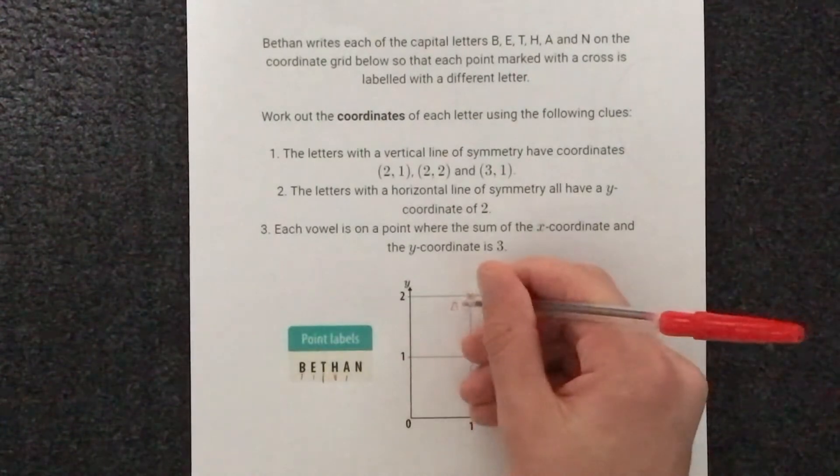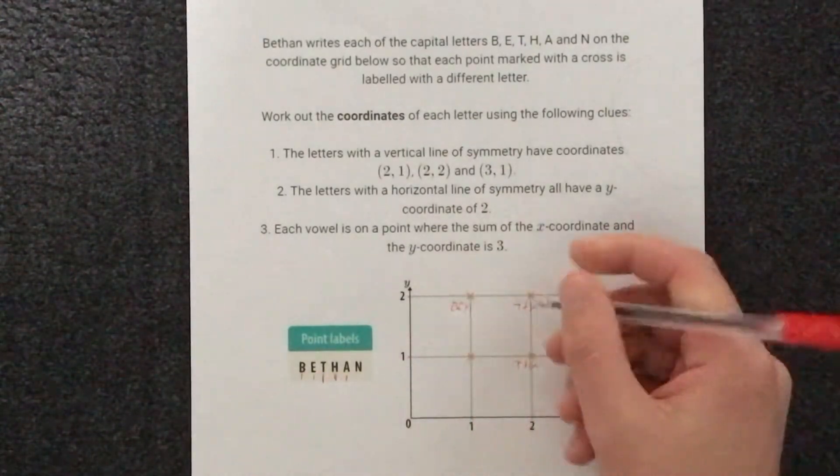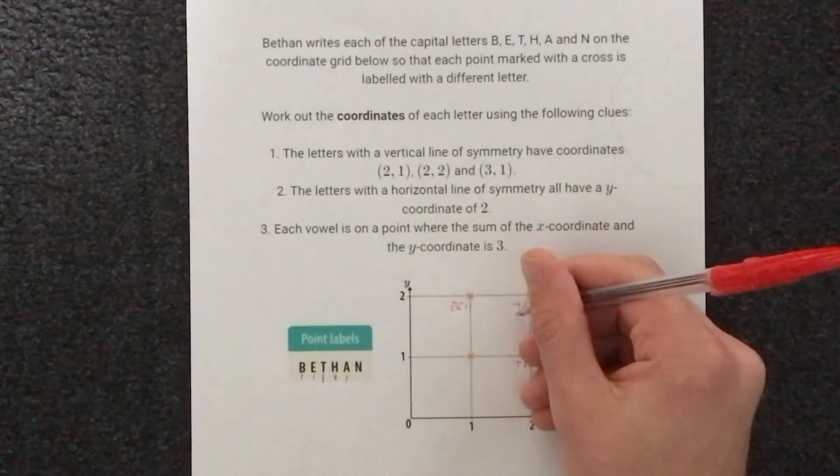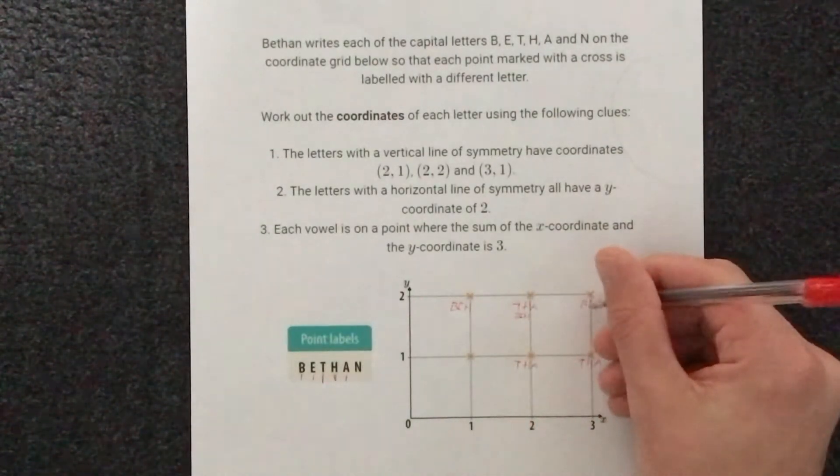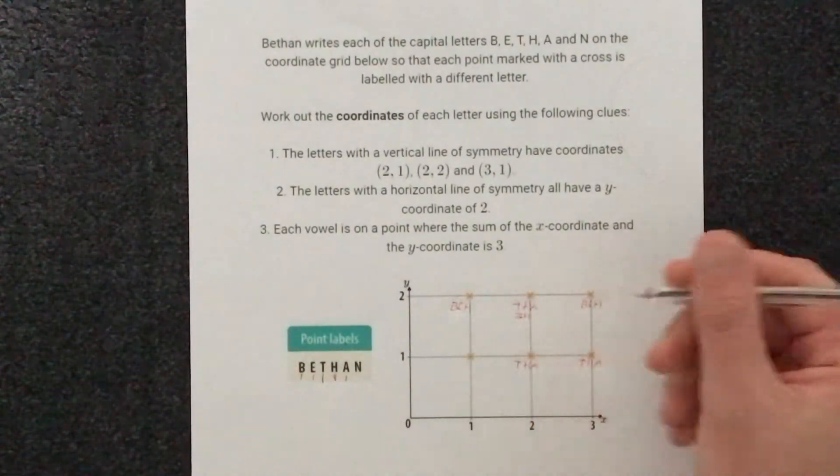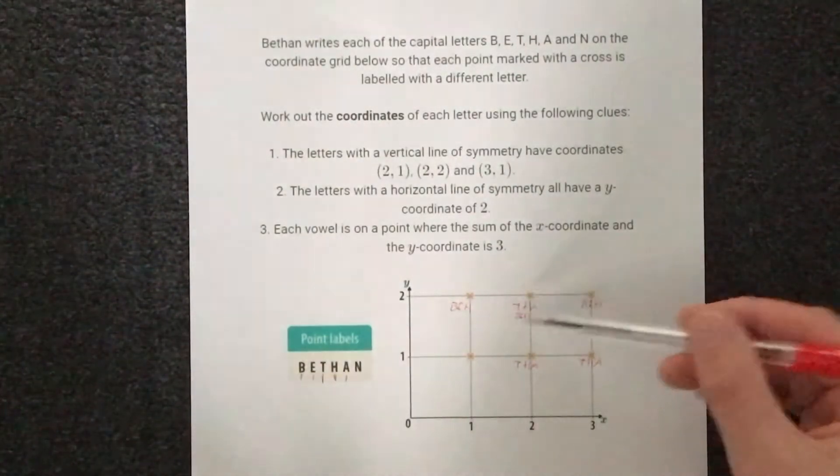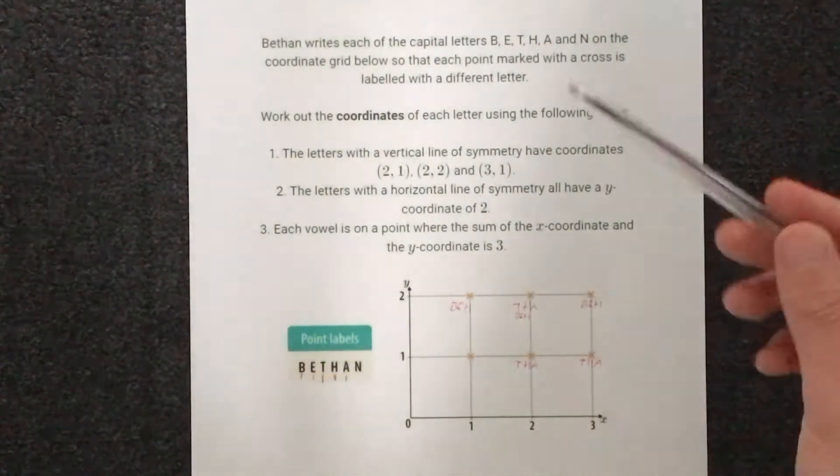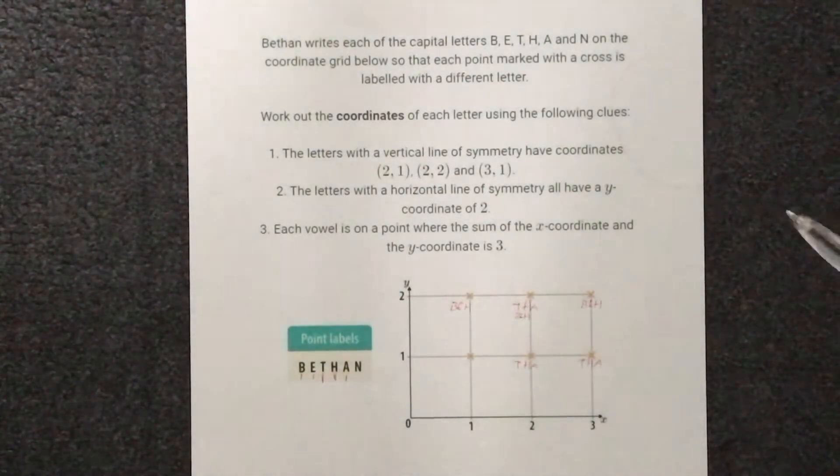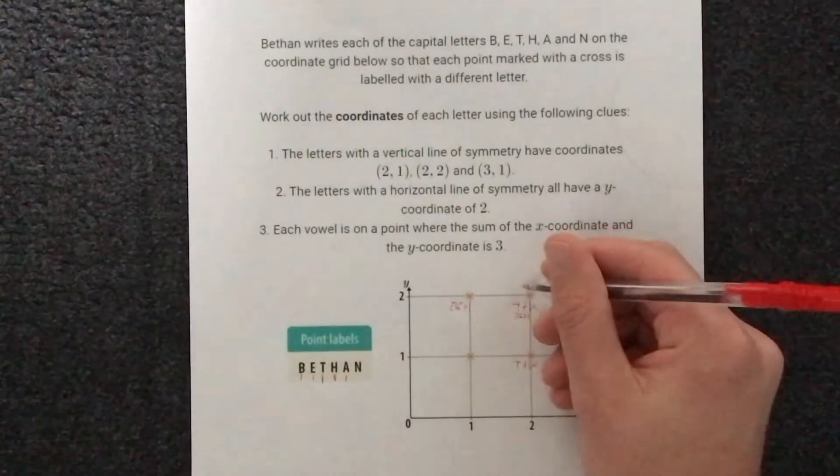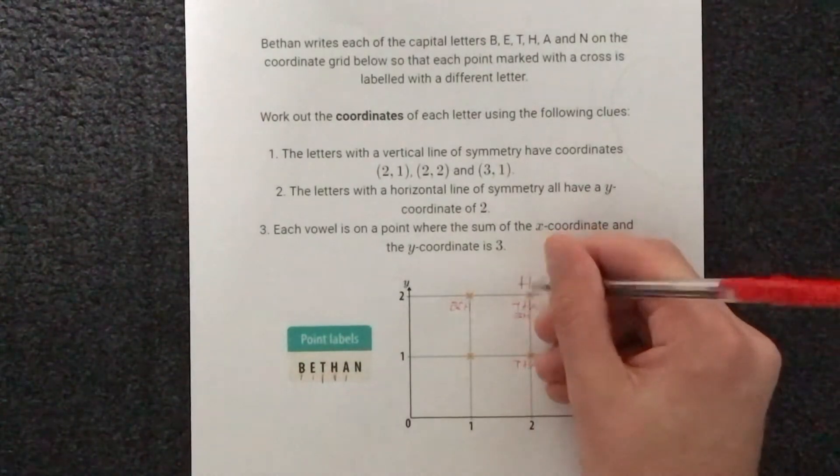So this one could be B, E or H. This one could be B, E or H. And this one could be B, E or H. But we're told that this one here has to also have a vertical line of symmetry, where the only letter that has both a horizontal and a vertical line of symmetry is H. So this (2,2) must be H.